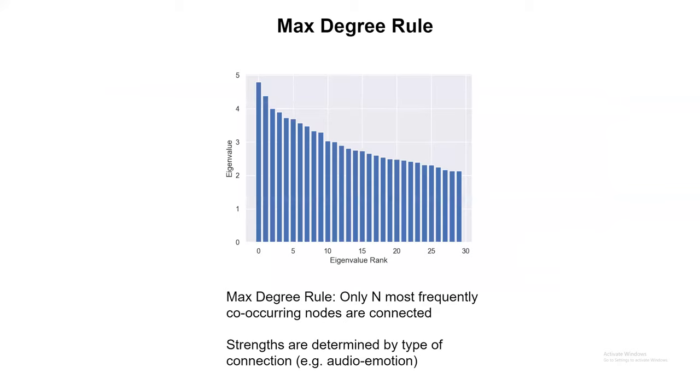What we did instead is we introduced what we call a max degree rule. The max degree rule says that any given node can only be connected to at most n other nodes. In this case, the maximum was five. When we connect this way, we get a much flatter eigenspectrum, and it's possible for different eigenvectors to be contributing on different trials.